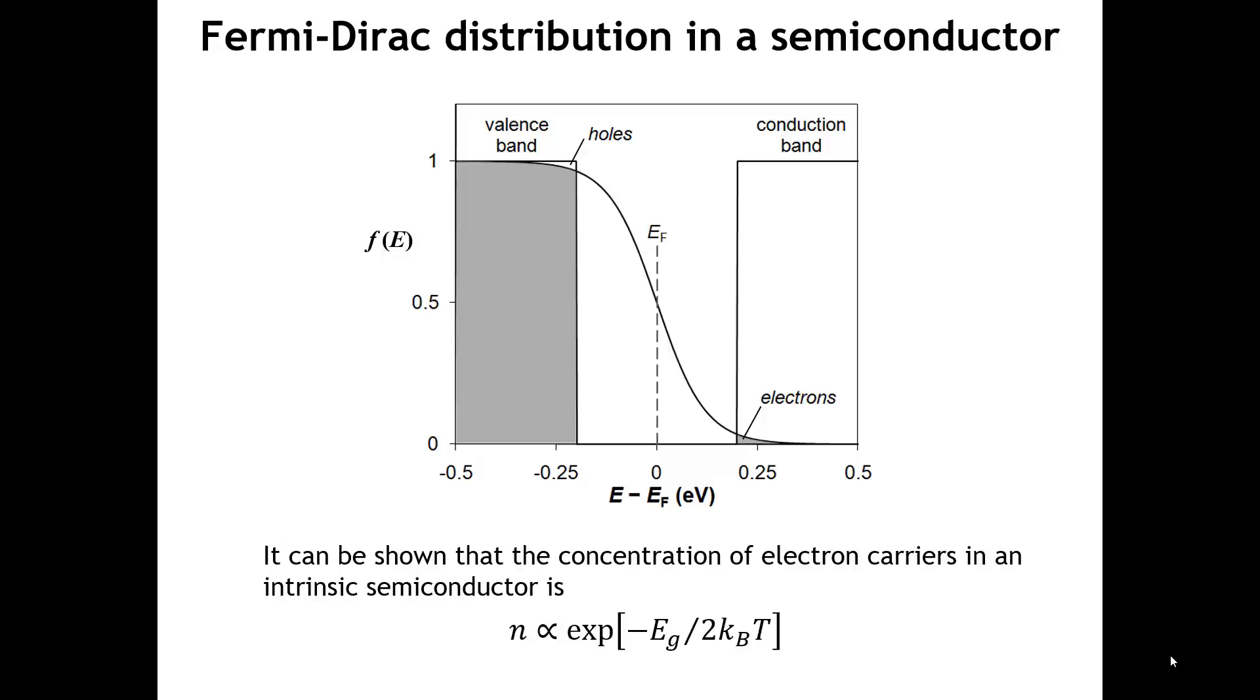Now for silicon, which has a band gap of 1.1 electron volts, the number of electrons that are present in the conduction band and can carry charge is approximately 10 to the 16th per meter cubed. Now let's put that number in context. 10 to the 16th sounds pretty big, but the number of atoms is 10 to the 28th in that same cubic meter. So that means that there's only one electron to carry the charge for every 10 to the 12th atoms. It means that only one out of every trillion silicon atoms gives up an electron that can carry the charge. And so the conductivity of intrinsic semiconductors is low because the concentration of charge carriers is low.